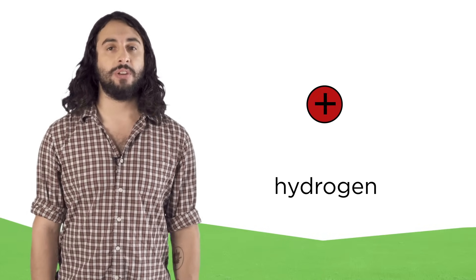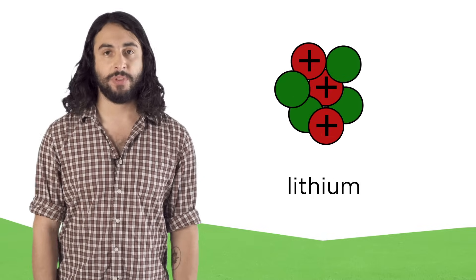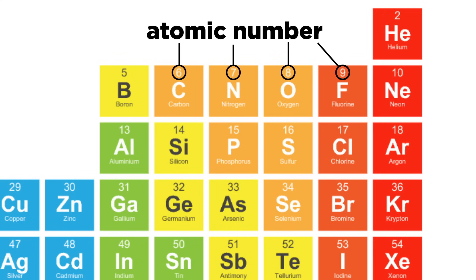The one that determines which element an atom belongs to is the proton. One proton means hydrogen, two is helium, three is lithium, and so forth. So an element has an atomic number, which refers to the number of protons in the nucleus.